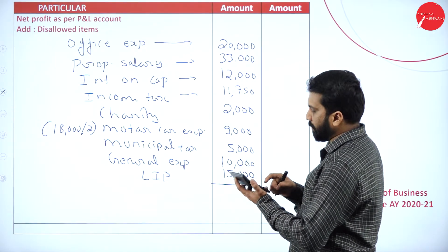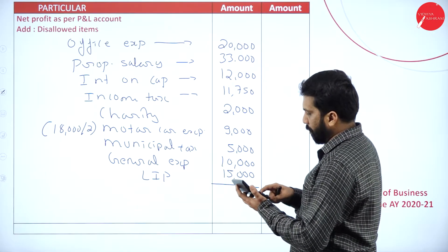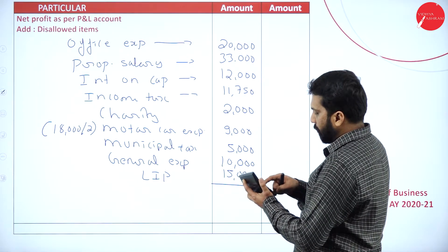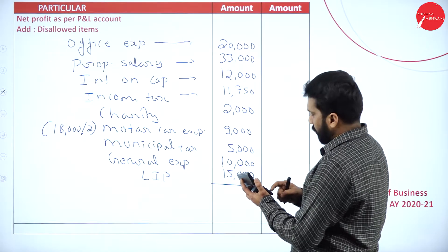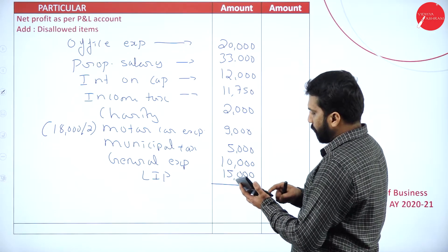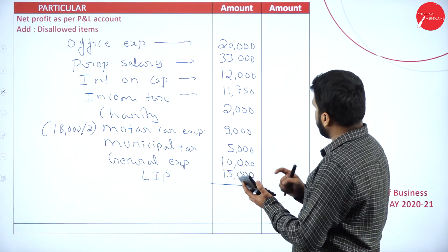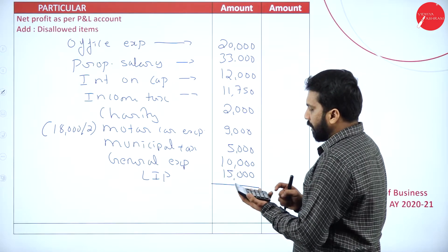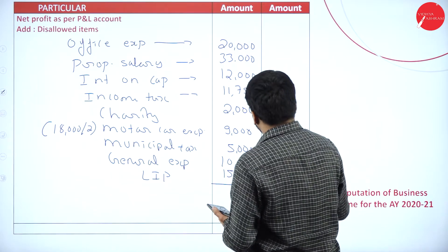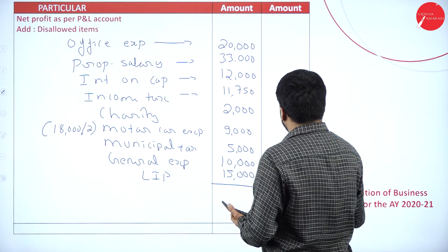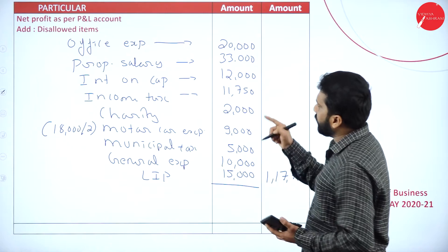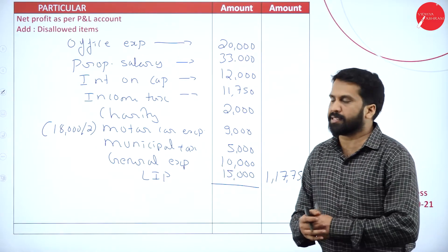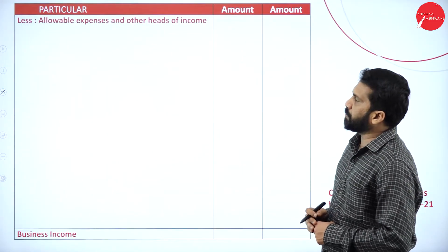Now we will add everything: 20,000 plus 33,000 plus 12,000 plus 11,750 plus 2,000 plus 9,000 plus 5,000 plus 10,000 plus 15,000. I got 1,17,750. These are your disallowed items — which are not related to business.